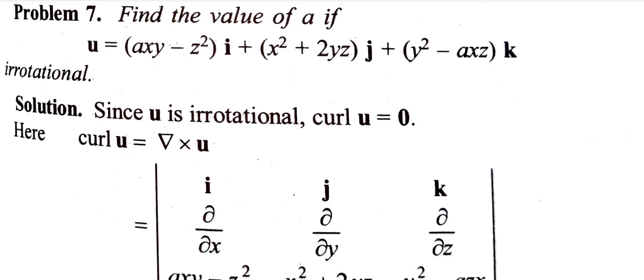Second question: find the value of 'a' if the vector field u is irrotational. Irrotational is related to the curl. Note that solenoidal and incompressible correspond to divergence, while irrotational corresponds to curl.